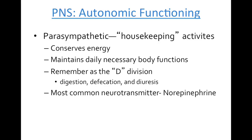Although there are several neurotransmitters that help with these divisions, there are two main ones to remember. The somatic nervous system helps with skeletal muscle and its neurotransmitter is acetylcholine. For the parasympathetic division of the autonomic nervous system, the main neurotransmitter is norepinephrine, which helps regulate smooth muscle and maintains digestion and homeostasis.